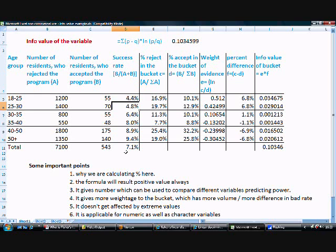Let's calculate info value. What is P here? Percentage of success in the bucket. Essentially here we are talking of 1200 divided by 7100, which is total of all the guides who rejected the program. Same way, percentage of guide who accepted the offer, percentage of guide who rejected the offer. Then we have weight of evidence, which is log natural C by D. Then we are calculating percentage difference C minus D and then we are calculating info value, which is multiplication of these two terms.